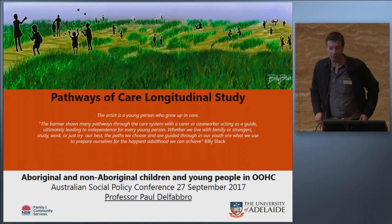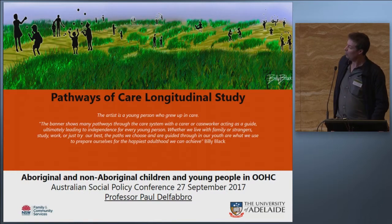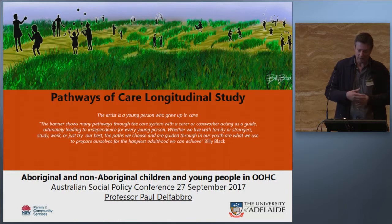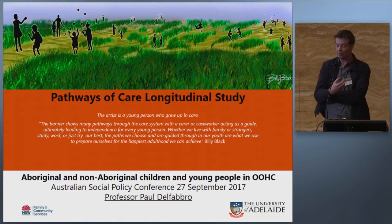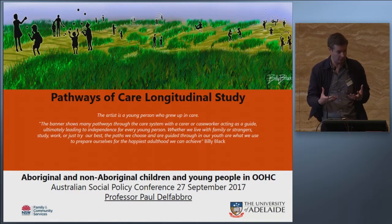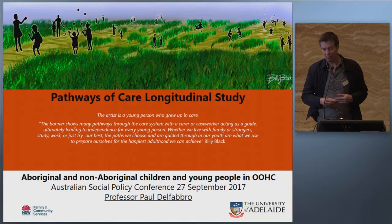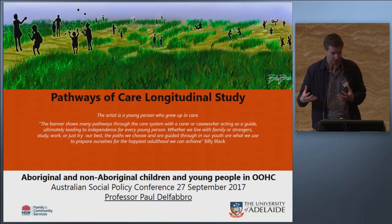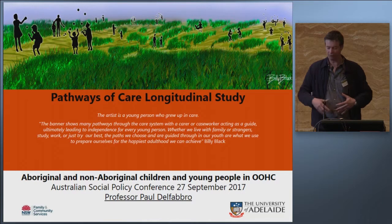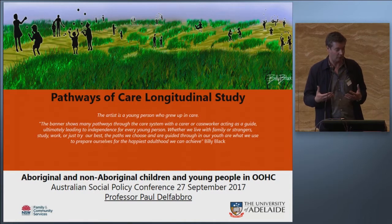These are fairly preliminary results which will be contextualised and analysed in more detail as I get further into the data. Aboriginal issues are quite complex — there's an overlap between Aboriginal status and kinship care, so Aboriginal children tend to be in kinship care more often. Many Aboriginal people come from regional rather than metro areas, creating a variety of potentially confounding factors we'll need to examine more carefully.